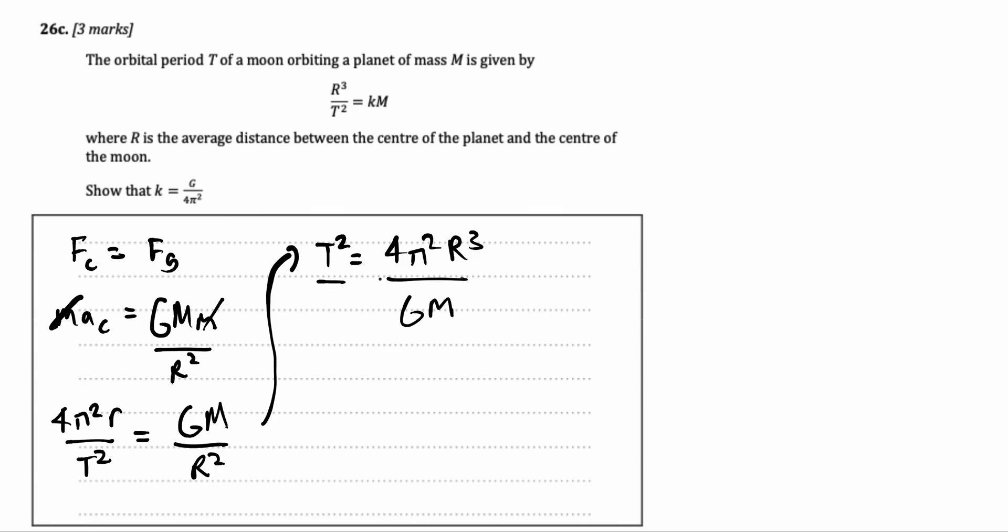Now, if you cross multiply and just rearrange this equation to solve for t square, we get that t square is equal to 4pi square r cubed over gm. Now we have an equivalent expression to substitute in. So, why don't we do that?